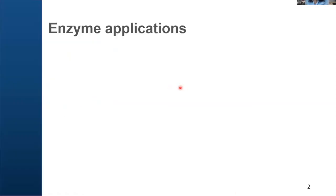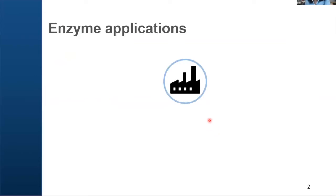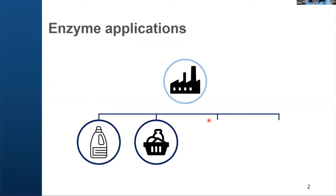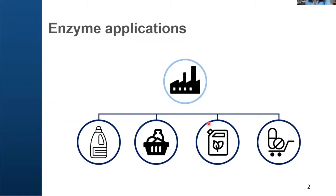Enzymes are today invaluable tools for many industrial applications due to their high efficiency to catalyze reactions. They can be used to make detergent, for food processing, biofuel industries, or pharmaceutical industries — they can be used for manufacturing drugs. However, natural enzymes lack the capacity to meet the increasing demand for industrial applications, and the ability to create any artificial enzyme for any desired chemical reaction is of great interest for computational enzyme design.